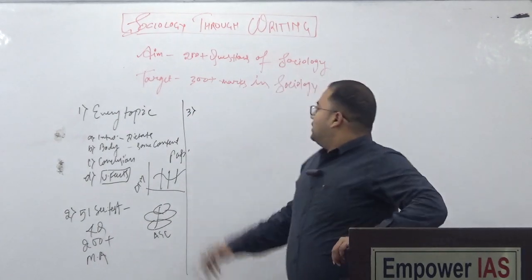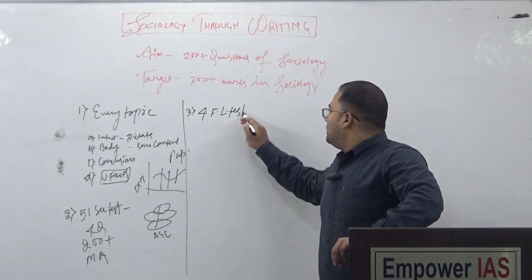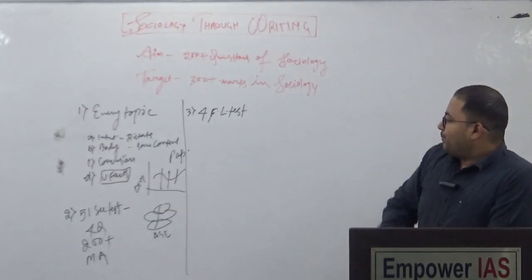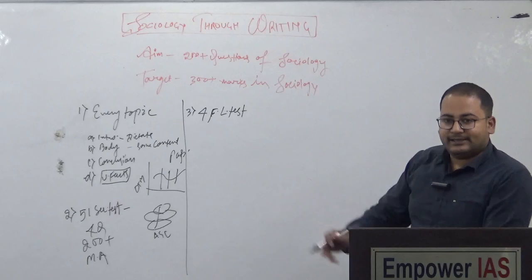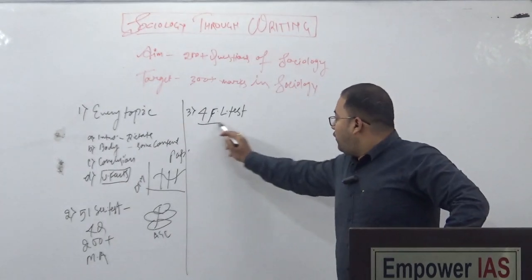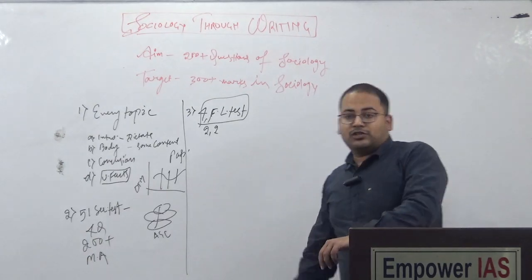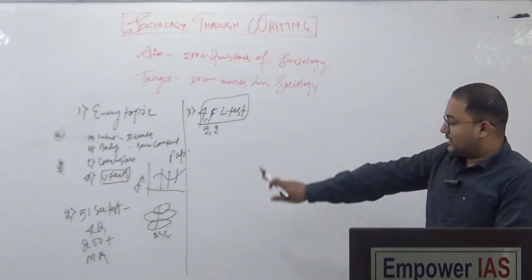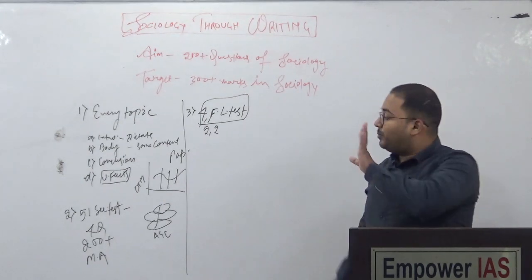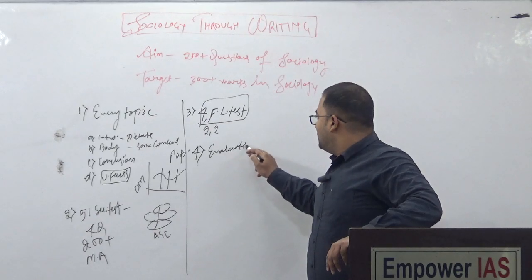The third benefit: once you complete the course — after covering each and every topic and writing 51 test series and reading the model answers — there will be four full-length tests. Two full-length tests of Sociology Paper One and two full-length tests of Sociology Paper Two.